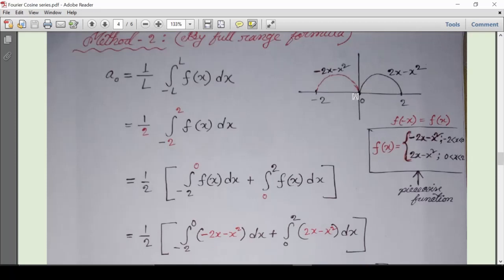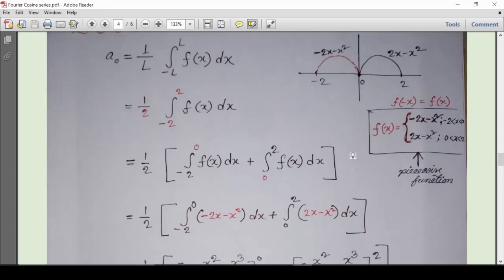The thing is, when we are integrating from minus 2 to 2, then the function f(x) is becoming actually a piecewise function. From 0 to 2, the function we already have is 2x - x². But when we are extending this function on minus 2 to 0, then the reflection about y-axis is the red colored curve, which is actually -2x - x².